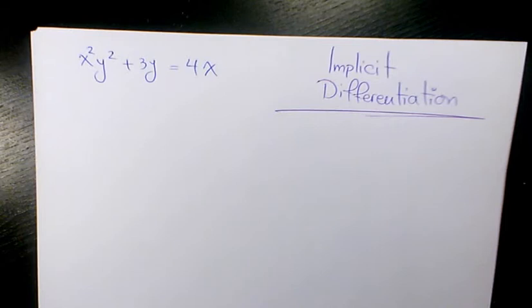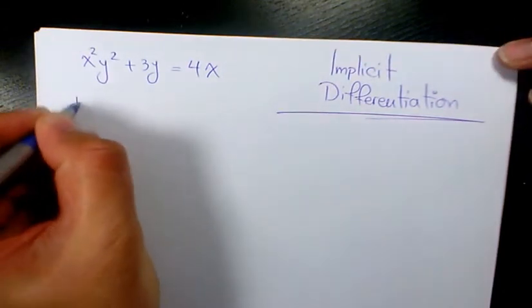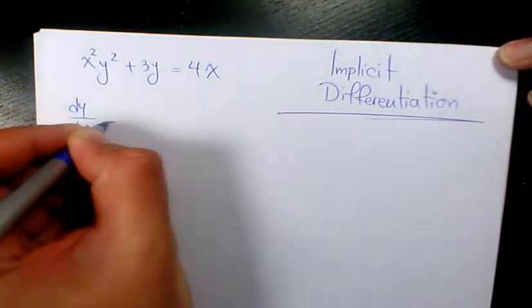In this video I want to show you how to find the derivative of x²y² plus 3y equals 4x using implicit differentiation. So we need to find dy over dx.